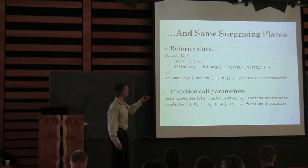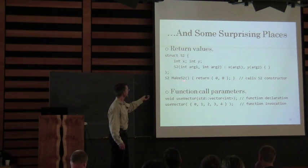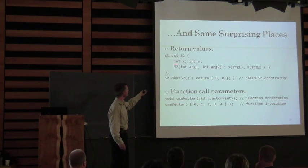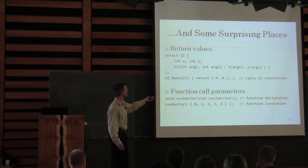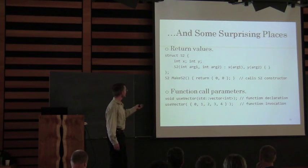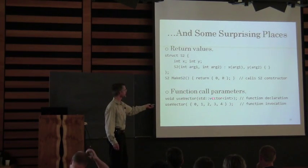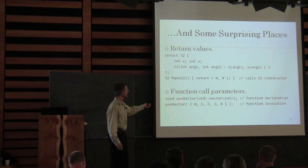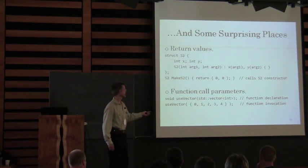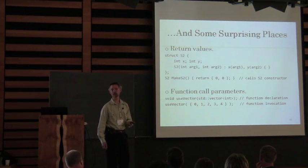You can also use it in return values. Here I have a function called make_s2, and I'm going to return an initialized s2 implicitly, simply using the brace initialization. I'm going to use it on a function call — here I have a function that takes a vector of int, and all I'm going to do is use the brace initialization. The compiler will take care of the rest of it for me.